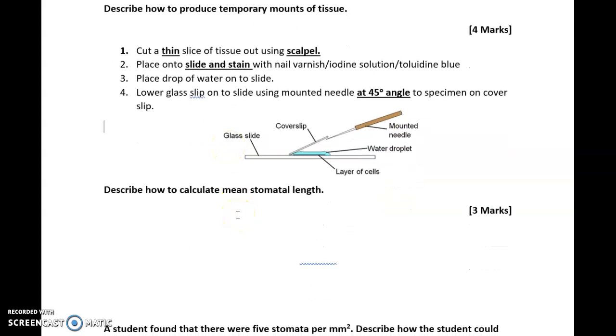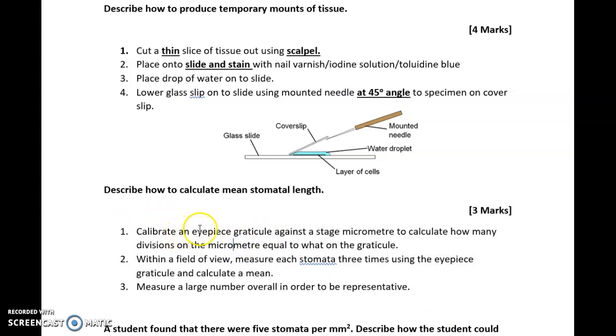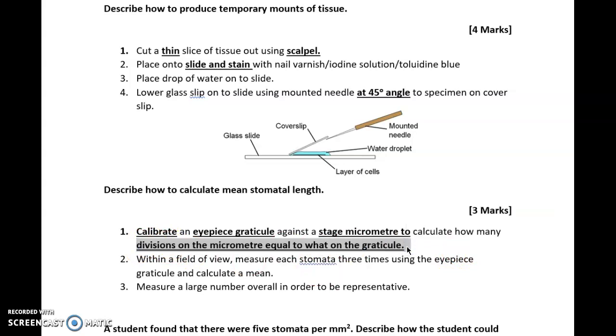The next question is to describe how to calculate the mean stomatal length. This has been asked quite a few times in different exam papers, and it's generally quite a standard answer. You've got to make sure you mention the equipment specifically. First of all, you need to calibrate, which is a key skill. Calibrate an eyepiece graticule against a stage micrometer to calculate how many divisions on the micrometer equal what on the eyepiece graticule. This is what calibration is—you've got to find out how many of the different divisions equal what. Then, once you've deduced that, within a certain field of view that you're observing, you need to measure each stomata a minimum of three times.